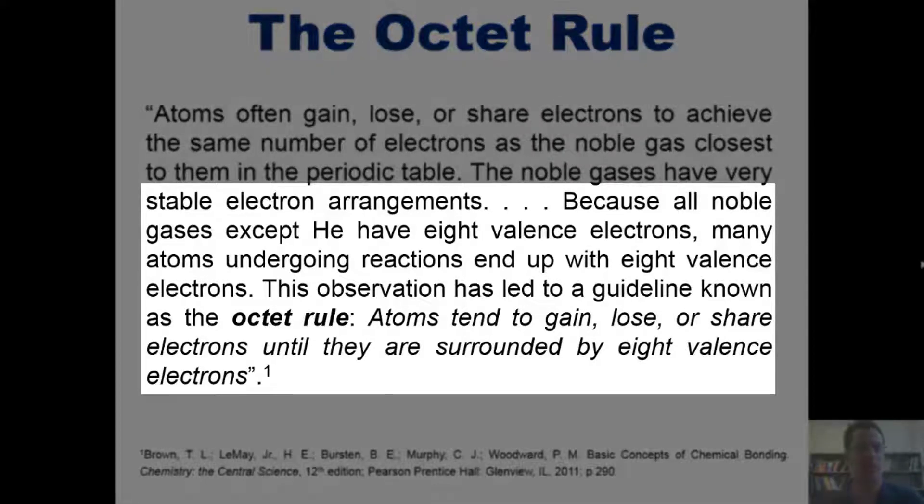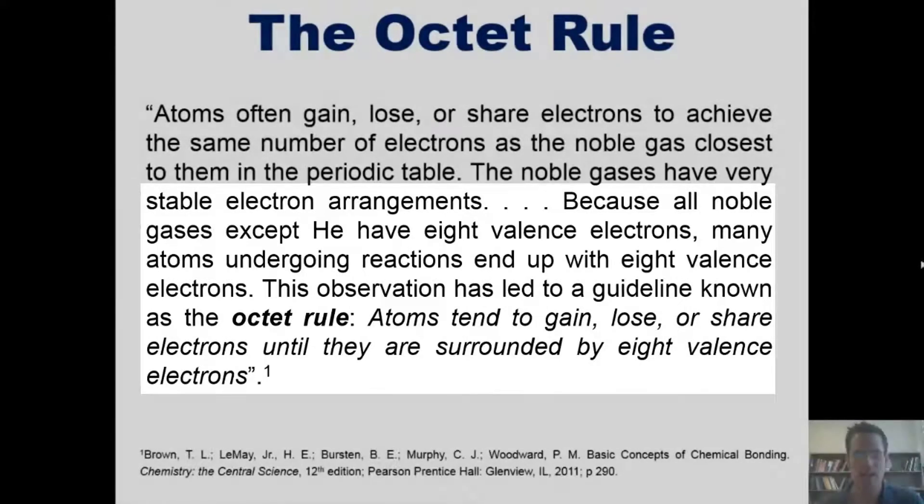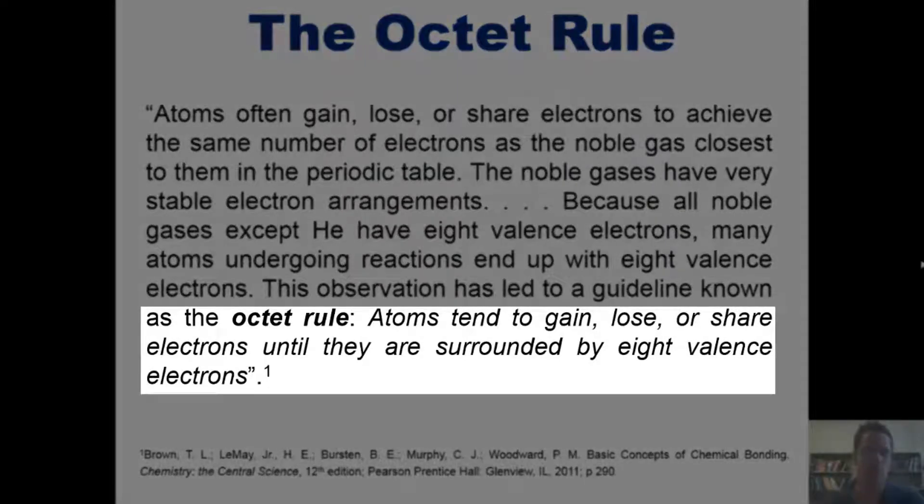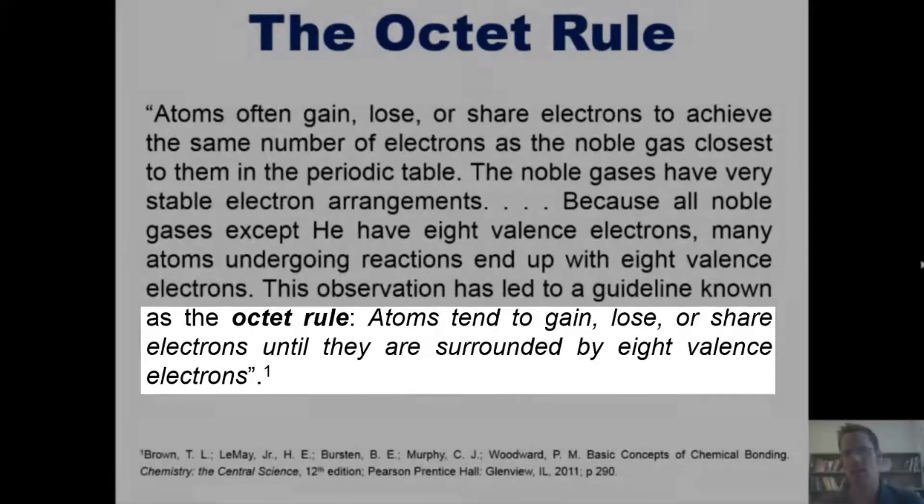Now, because all noble gases except helium have eight valence electrons, many atoms undergoing reactions end up with eight valence electrons. This observation has led to a guideline known as the octet rule, which says that atoms tend to gain, lose, or share electrons until they are surrounded by eight valence electrons.